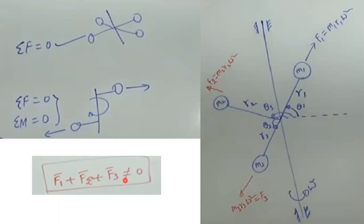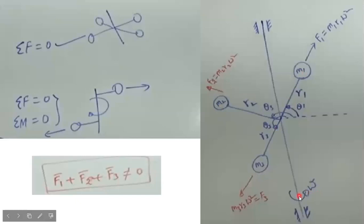In order to avoid that unbalance, we are going to add some other mass to counter-attack it. Here we have a plane with three different masses rotating in the same plane. Mass m1, m2, and a third mass all have respective radii r1, r2, and r3, and are at angles theta1, theta2, and theta3. The shaft rotates with a common angular velocity omega.